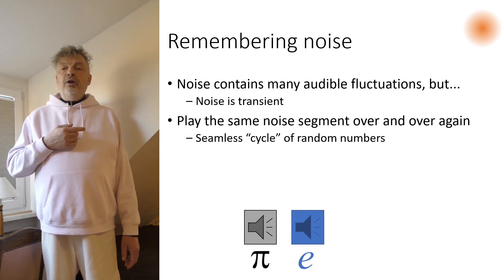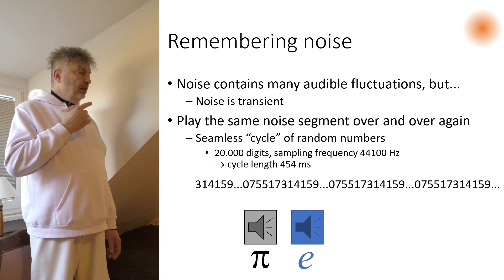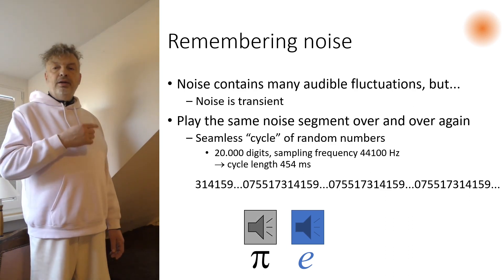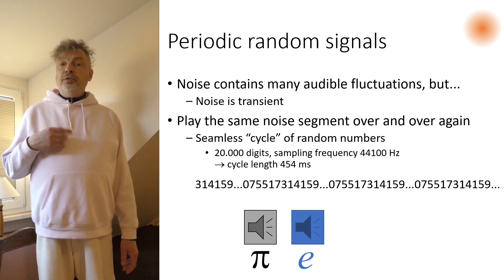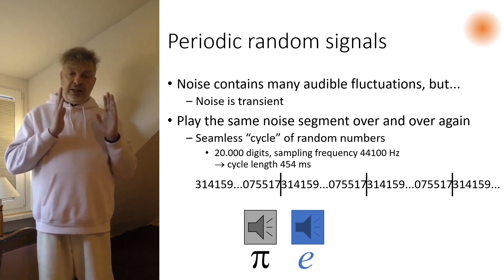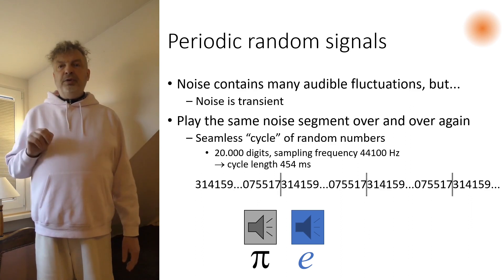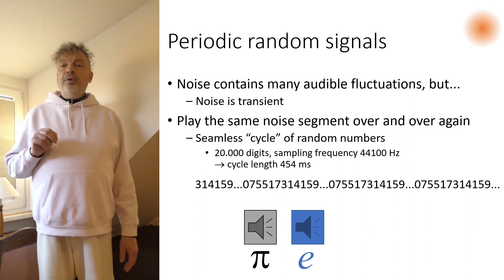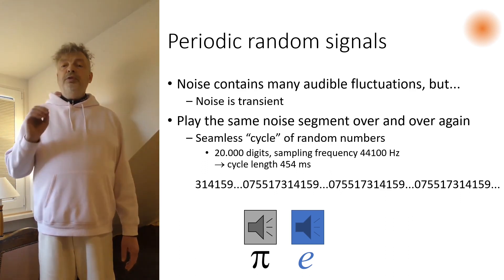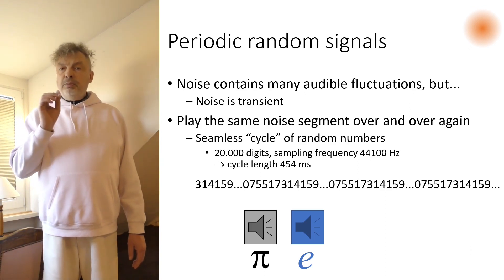Listen to this cycle of the digits of the number pi. I took the first 20,000 digits and played them over and over again. I suppose you heard the rhythmical structure within this piece of noise. This was not due to rhythmically reoccurring cut artifacts, because if you cut noise and add it to itself, there is no cut artifact. What you heard were random fluctuations within this specific piece of noise, and they differ from noise segment to noise segment.